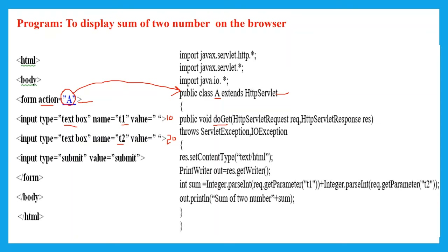Since the submission type is Get, we use the DoGet method to handle the request. The values 10 and 20 will be visible on the URL. The servlet receives the values and performs the sum operation. The DoGet method takes two arguments: one is a request argument belonging to the HttpServletRequest interface.